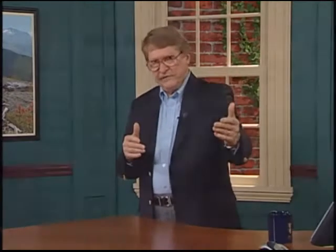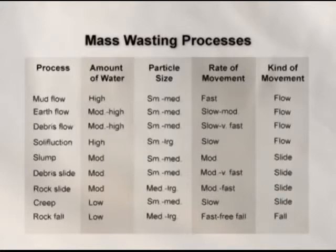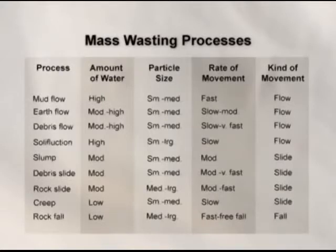There's a chart that shows all the different kinds of mass wasting, and the classification scheme is pretty much based upon how much water is available. The different kinds are broken down into flows, slides, and falls. Flows require quite a bit of water. Slides require some water, but not nearly as much as flows. Falls don't require hardly any water at all. That's the fundamental difference between the different kinds of groupings of mass wasting processes.